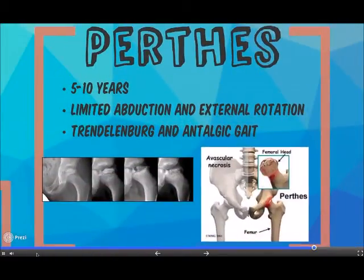Perthes disease is a partial or total avascular necrosis of the femoral head. It should be suspected in the male child between 5 and 10 years presenting with a Trendelenburg and antalgic gait.